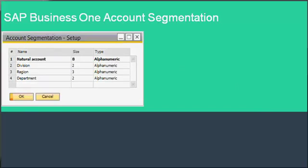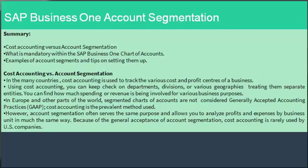Account segmentation has a setup window in SAP Business One you can use to define account segments. For the name field, specify an alphanumeric name up to 100 characters for the segment. SAP Business One provides four predefined segments; if required, you can rename these or define additional ones. For size, specify the segment size in characters — the maximum size is 20 characters. You can also change the predefined size. For type, select either alphanumeric or numeric.